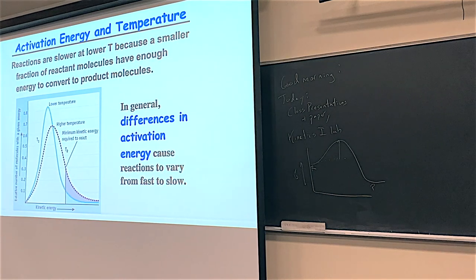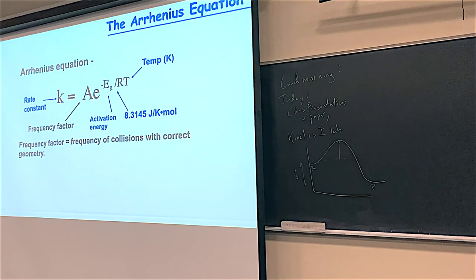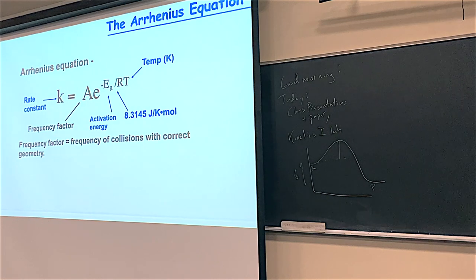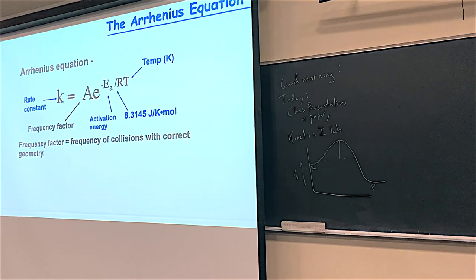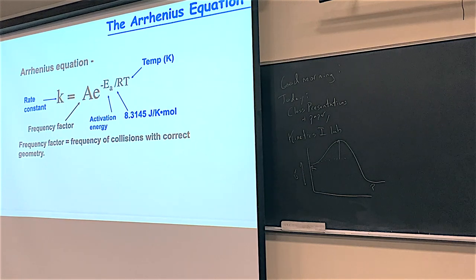One thing that's really important is being able to calculate the energy of activation — how high is the barrier? A scientist named Arrhenius created an equation that contains the energy of activation, E sub A. This relationship shows that E sub A is related to the rate constant K, and there's a temperature dependence as well. Big R here is the gas constant in joules per mole Kelvin. Don't use the 0.082057 number; use 8.3145. You can also use 8.3145 × 10⁻³ kilojoules per mole Kelvin.